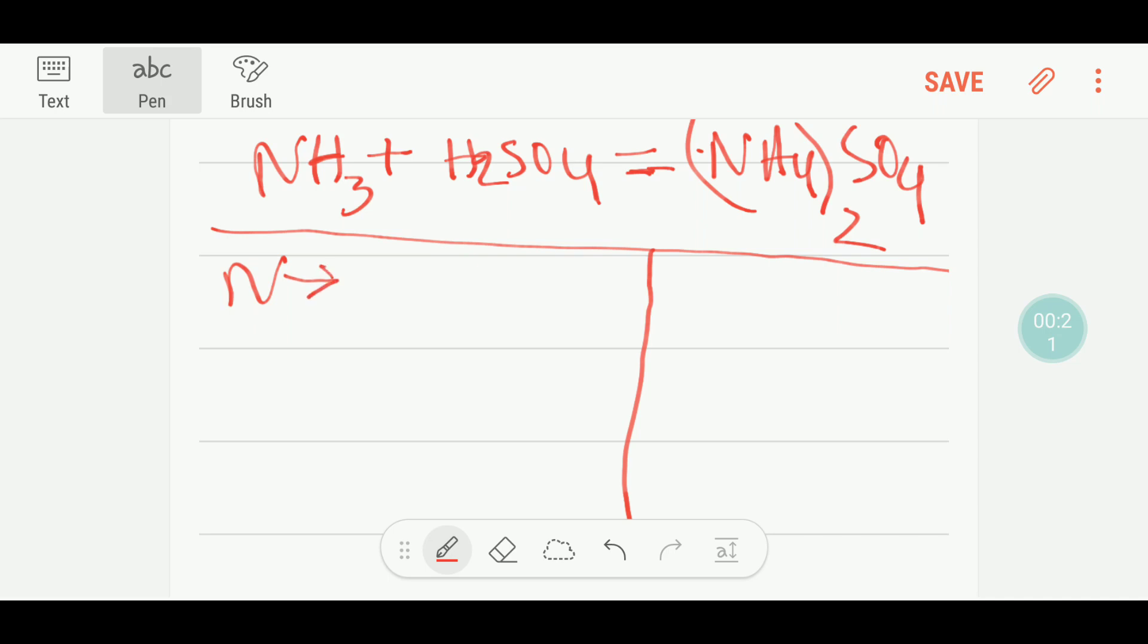nitrogen here, we have three hydrogen plus here we have two nitrogen that gives us five hydrogen. And here you have one sulfur, here you have four oxygen, here you have two times one, that is you have two